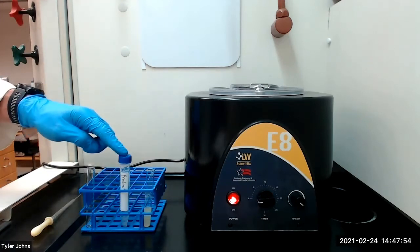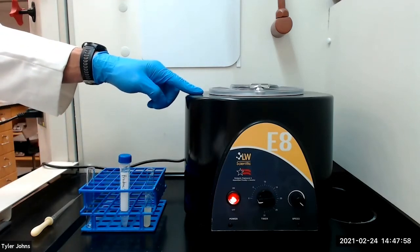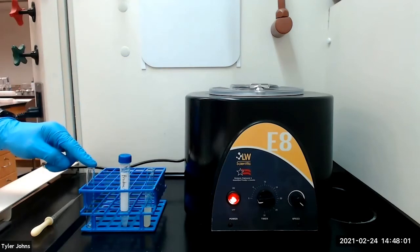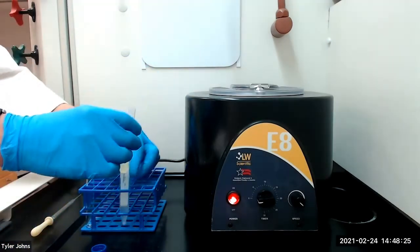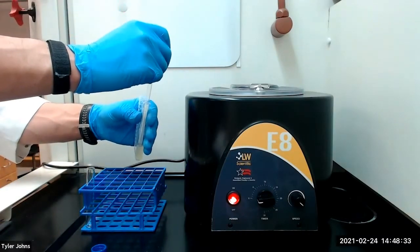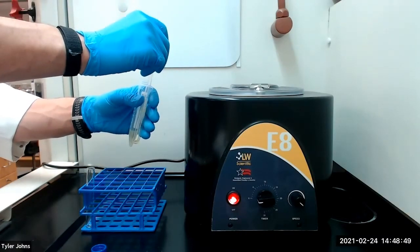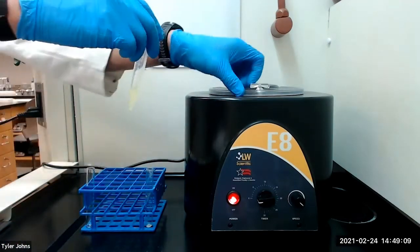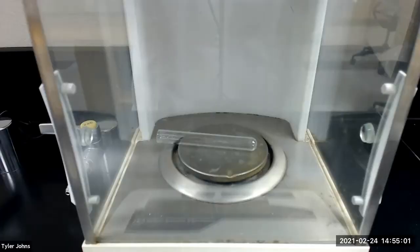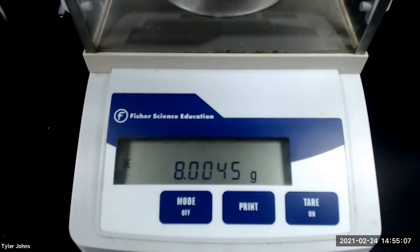We will then centrifuge the acetone extract for 2 to 3 minutes until the liquid clears. During the centrifugation, we will pre-weigh a new dry test tube. The mass of the pre-weighed test tube is 8.0045 grams.